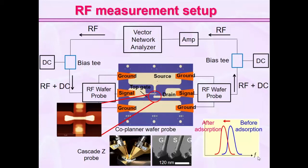We used a network analyzer with a bias T. Whenever we wanted to do DC biasing, we used the bias T. It is connected through coaxial cable to the inside of the probe, and similarly we take out through bias T, and we had amplifiers before the signal is given to the network analyzer. In this measurement system, we did not use DC biasing at all.